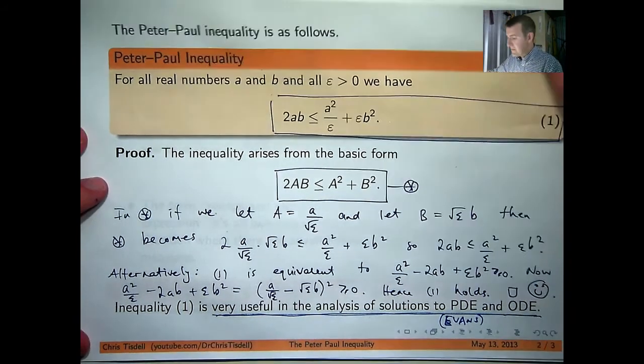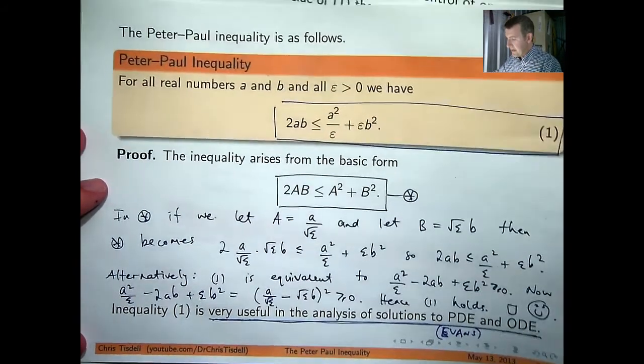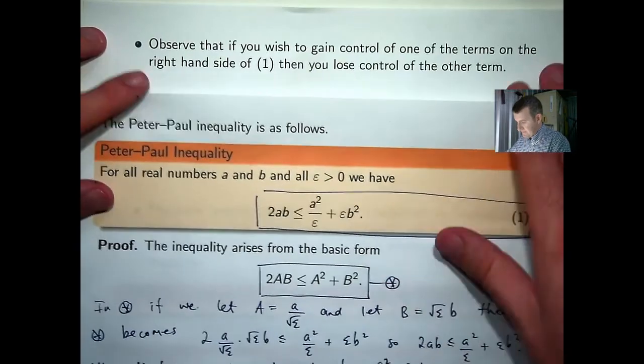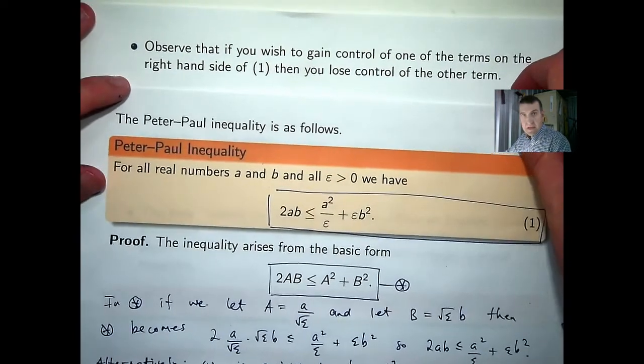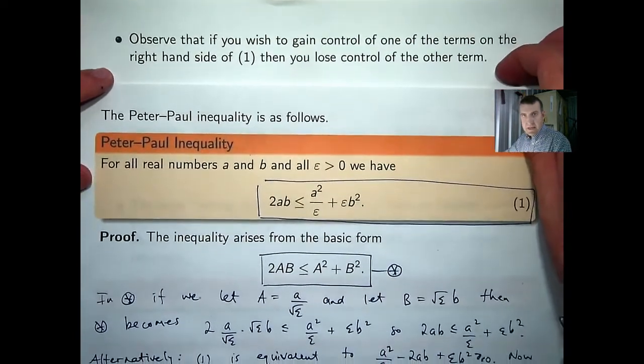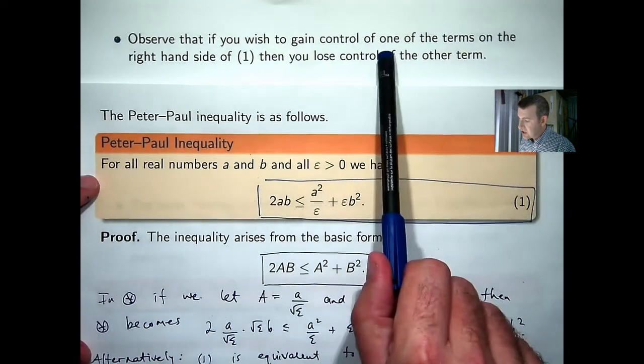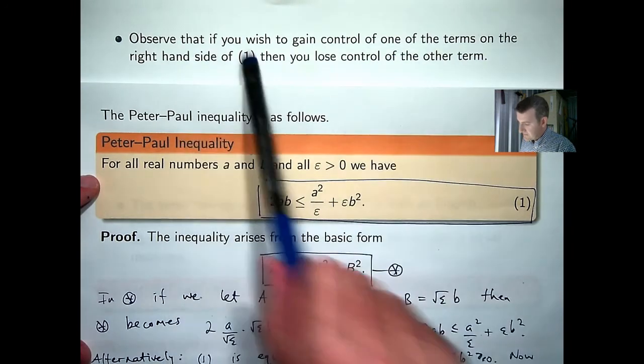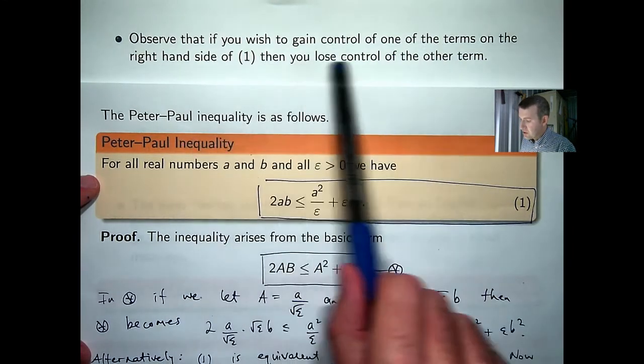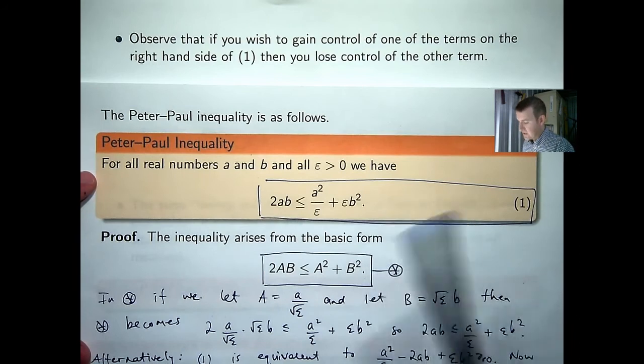So let's talk a little bit about the name now, the name of the Peter-Paul inequality. Well, the name arises out of the following observation. If you wish to gain control of one of the terms on the right-hand side of 1, then you lose control of the other term.